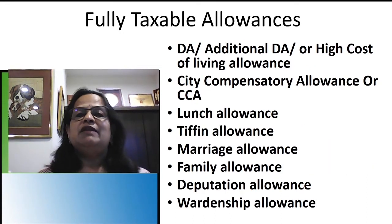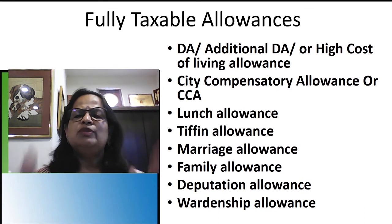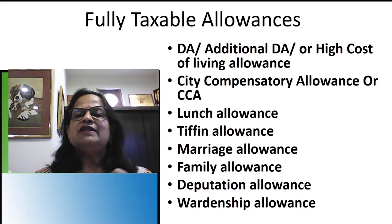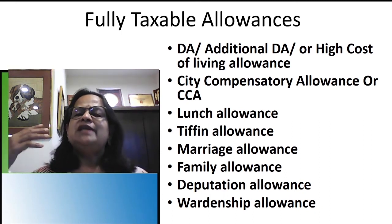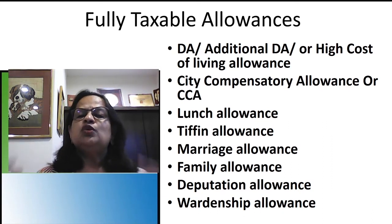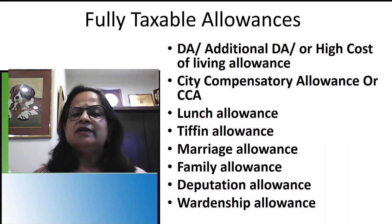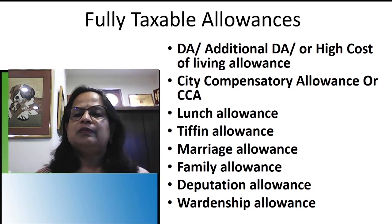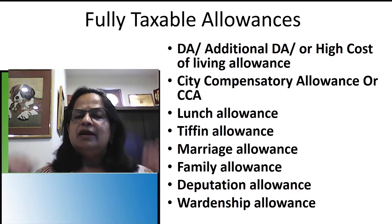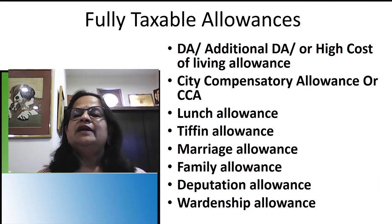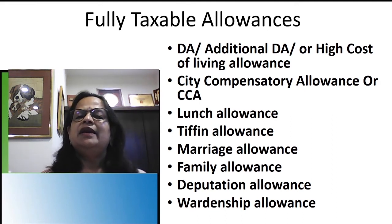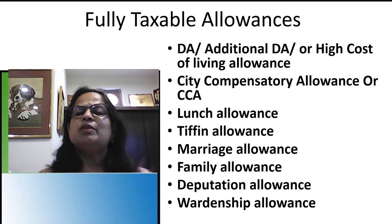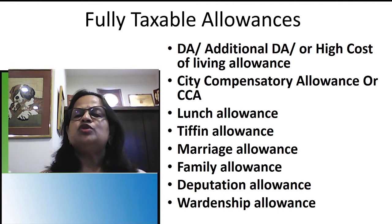Now we come to fully taxable allowances. Dearness allowance — also called additional DA or high cost of living allowance — is fully taxable. The central government periodically checks the inflation rate and increases DA by 2% or 3% when inflation rises. State government employees typically follow with a similar increase. This dearness allowance is automatically added to salary when inflation goes up.